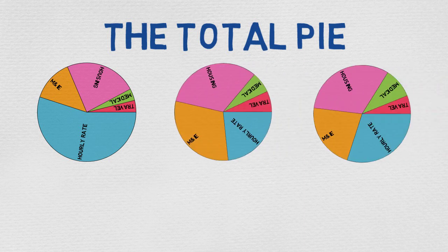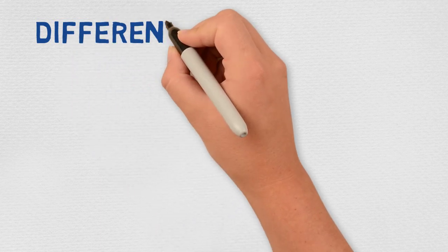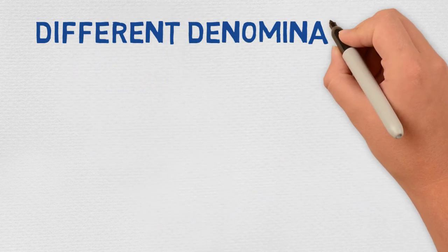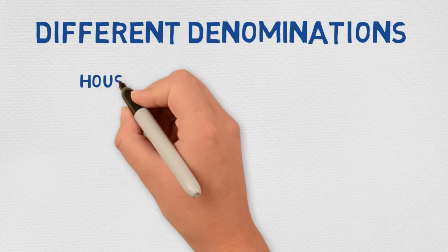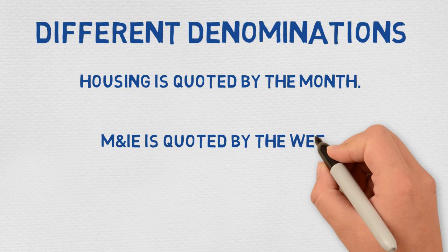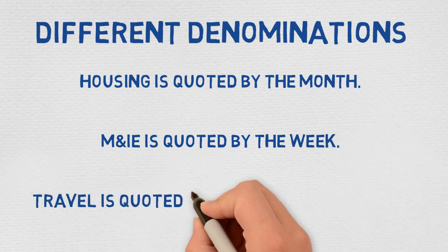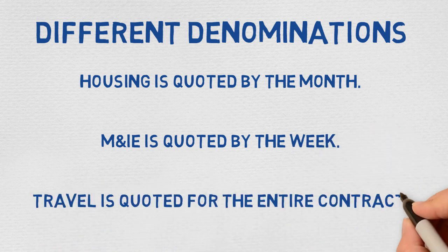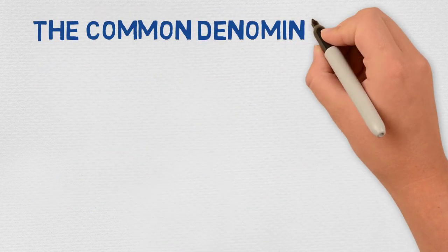Now, in order to fit everything into a pie chart, we need to break everything down to a common denominator. The problem is that agencies often quote the compensation variables in different denominations. For example, housing stipends are quoted by the month, meals and incidental expenditure stipends are often quoted by the week, and travel stipends are often quoted as a total value for the entire contract. So the common denominator here is time.